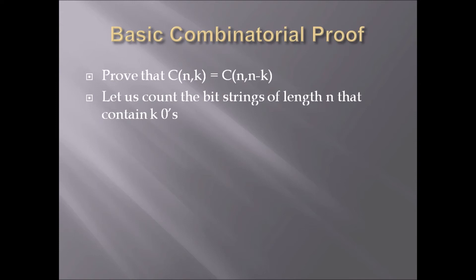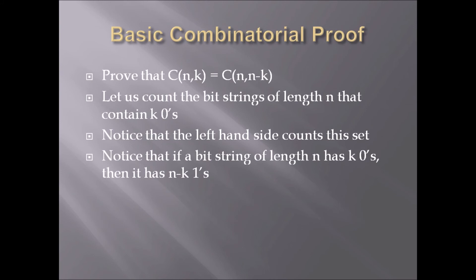Let us count the bitstrings of length n that contain k zeros. Notice the left-hand side counts this set. As in the previous slide, we said bitstrings of length n with k zeros - that's n choose k. Notice that if a bitstring of length n has k zeros, then it has n-k ones.